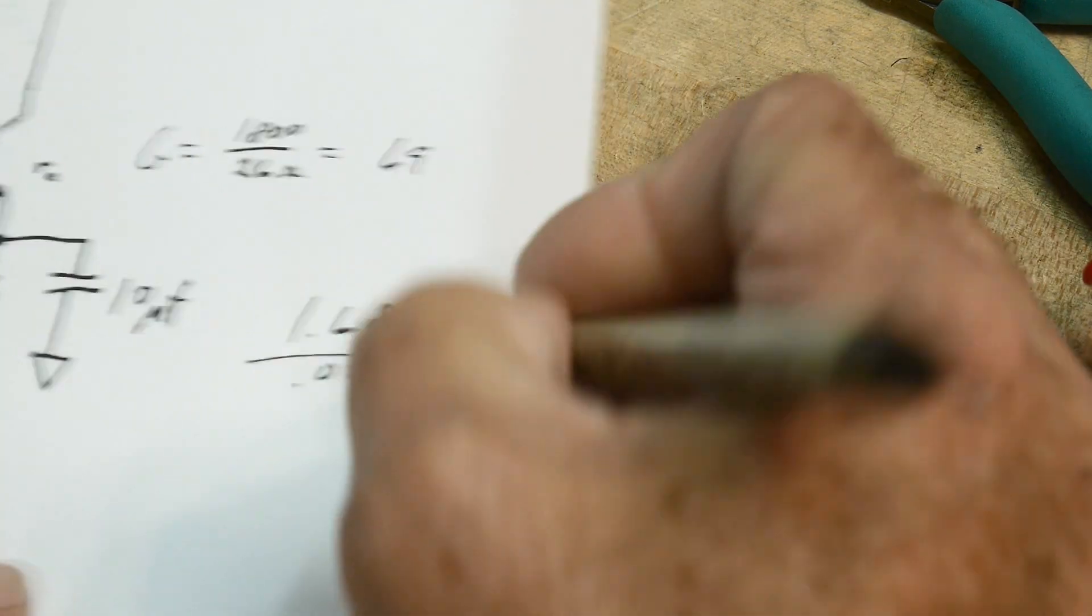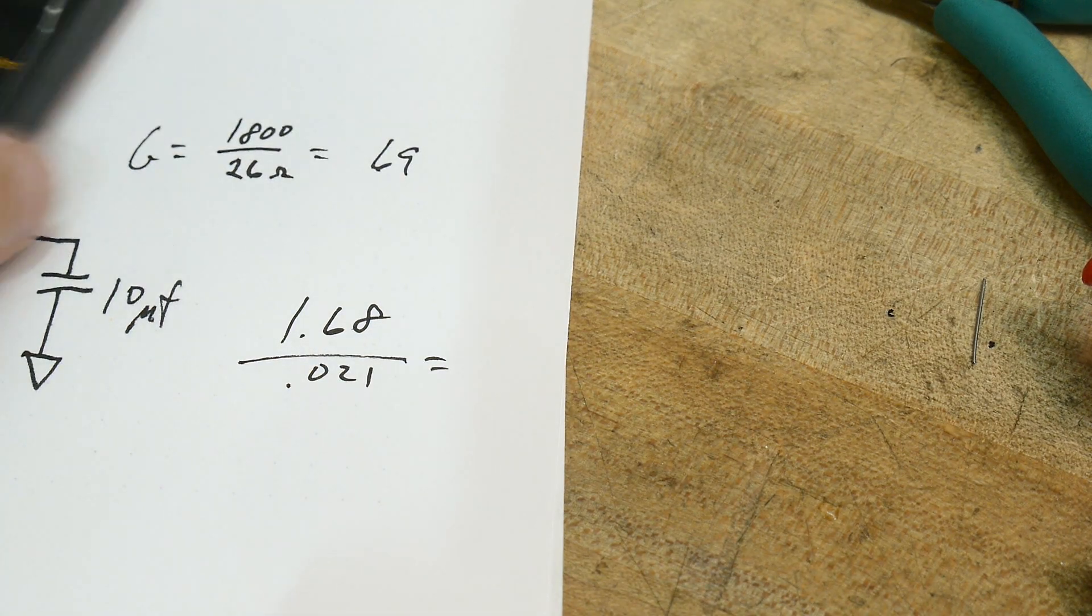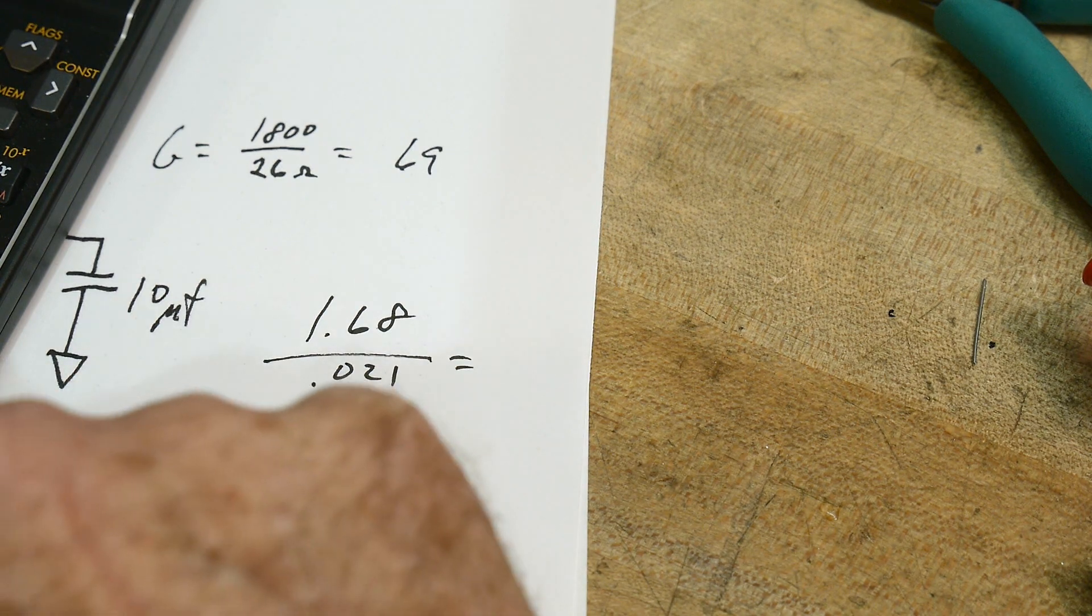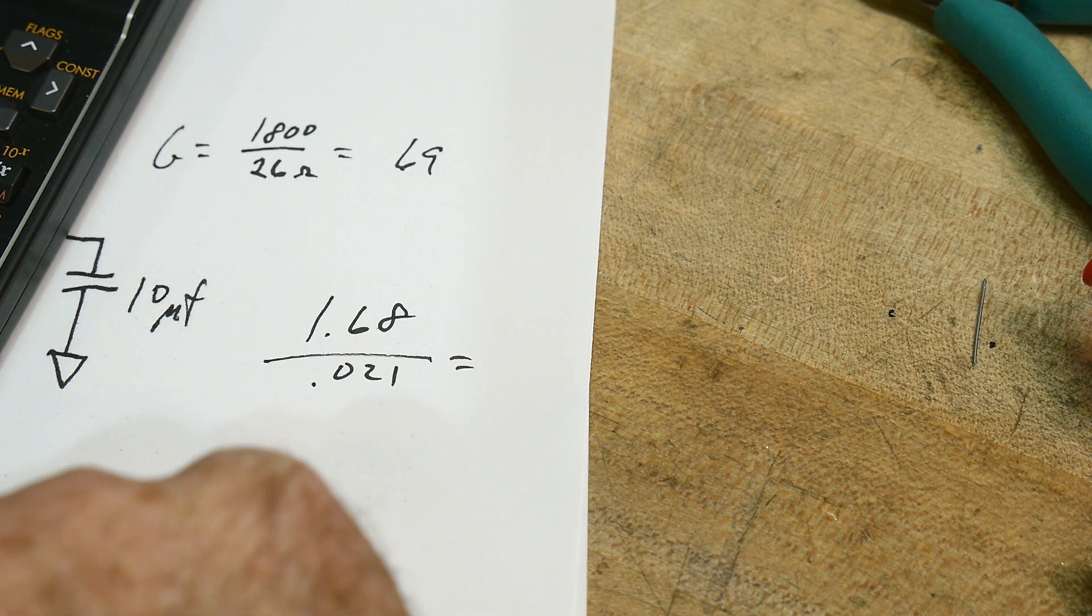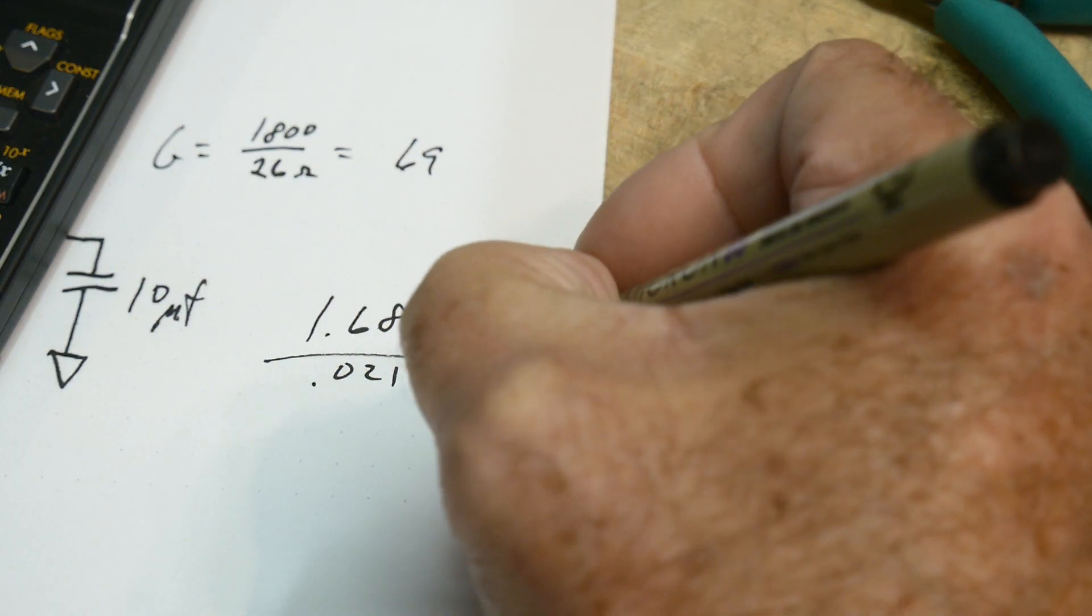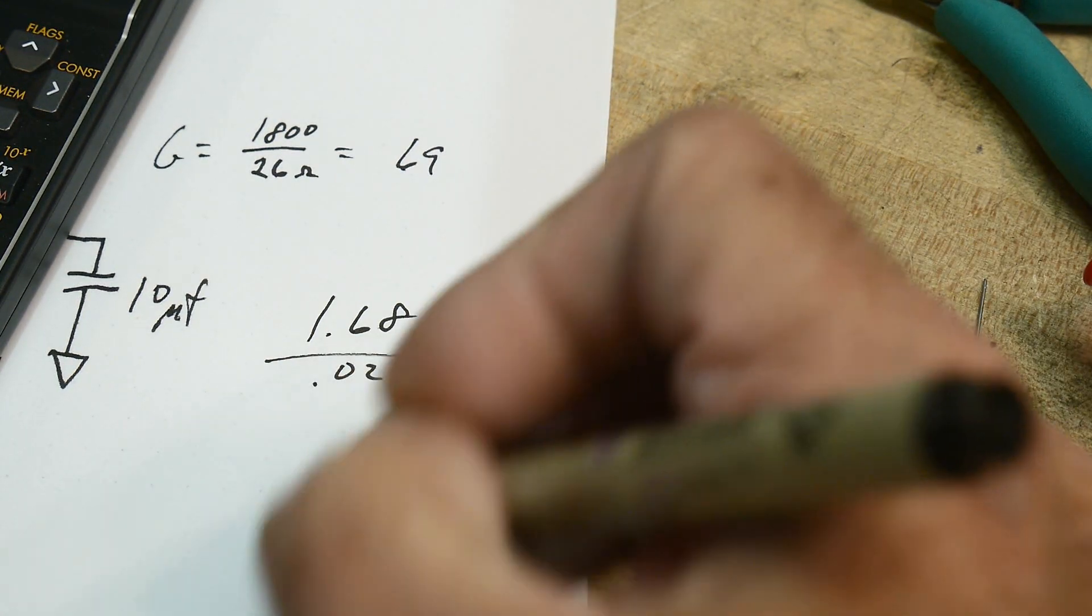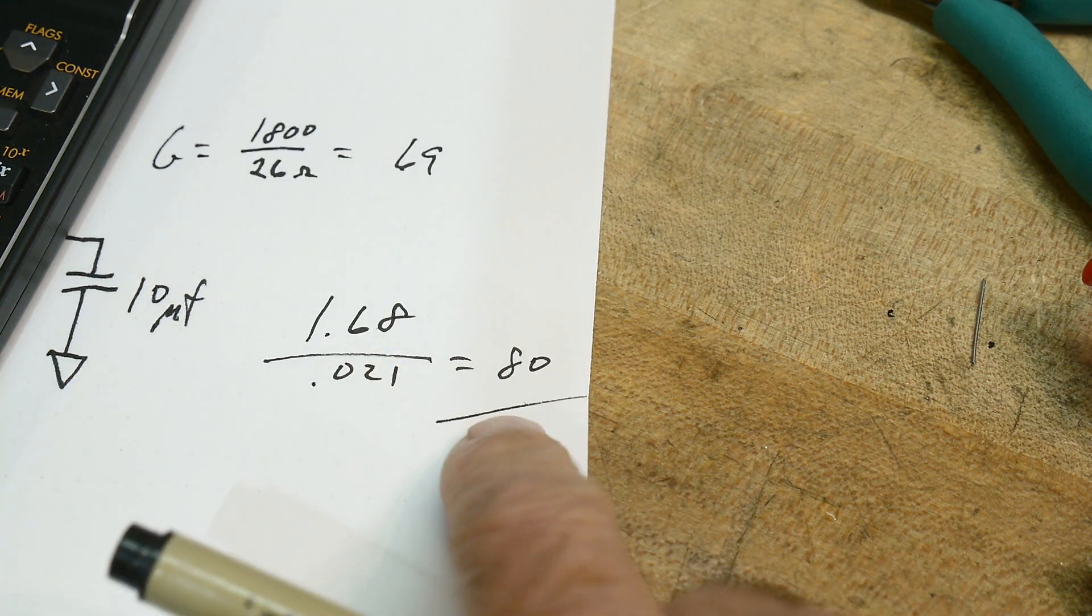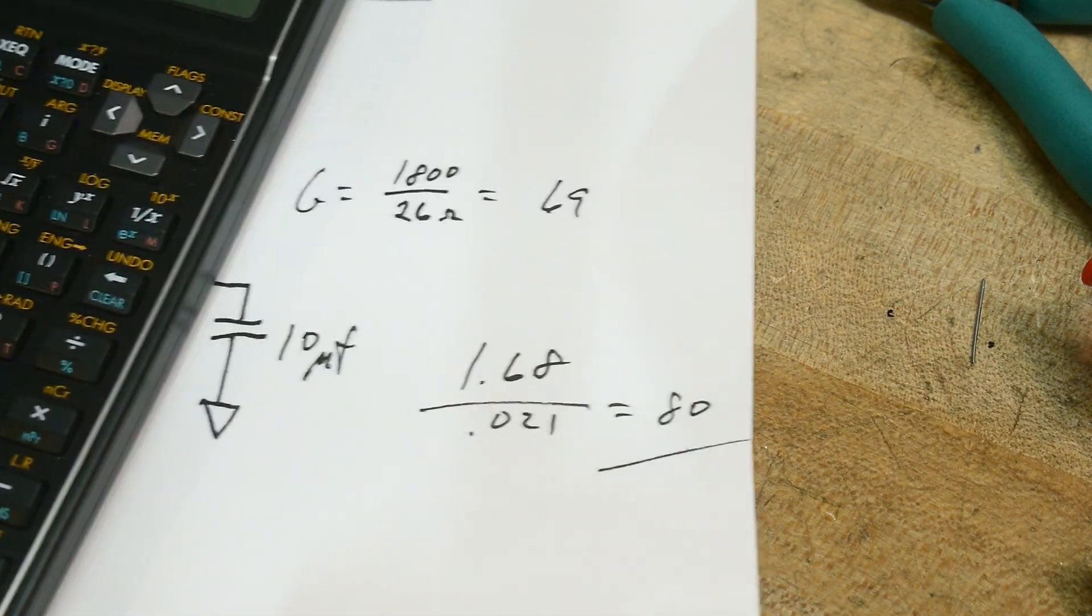So if we divide those two numbers, we get 1.68 and 21 millivolts is 80. So we're getting a gain of about 80 and we're calculating 69.